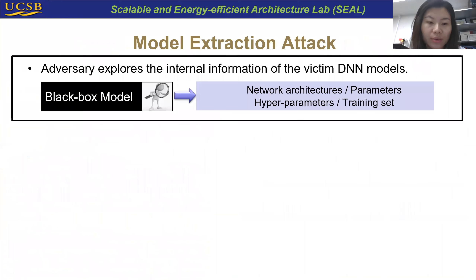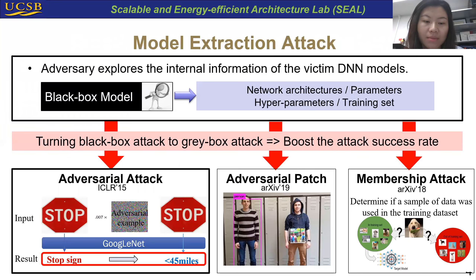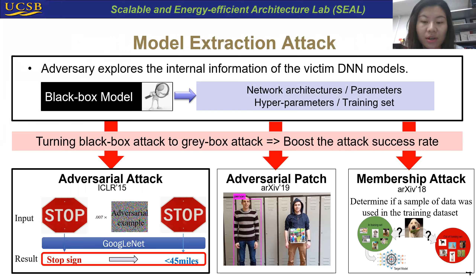In this work, we focus on a fundamental one: model extraction attack. Under such an attack model, the adversary aims to explore the internal characteristics of the black-box DNN model, including the network architecture, parameters, hyperparameters, or even the training sets. Such an attack is able to turn a black-box model attack to a gray-box attack, and can boost the attack success rate of many other attacks such as adversarial attack, adversarial patch, and membership attack.